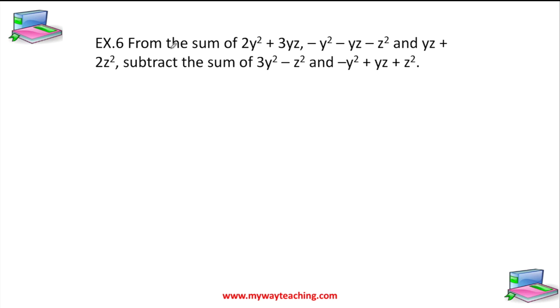We read this question: from the sum of 2y² + 3yz, -y² - yz - z², and yz + 2z², subtract the sum of 3y² - z² and -y² + yz + z².